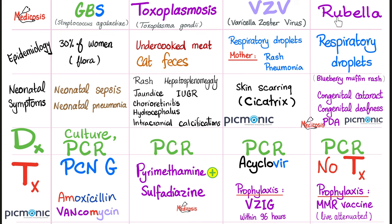Rubella — the R in the acronym. Acquired by respiratory droplets. Symptoms include the blueberry muffin rash, congenital cataract, congenital deafness, patent ductus arteriosus, hypoplastic pulmonary artery, and glaucoma. Diagnosis: PCR. Treatment: there is no treatment for rubella once infected, but you can prevent it via the MMR vaccine. This is a live attenuated vaccine, so we should not give it during pregnancy — we should give it before pregnancy.